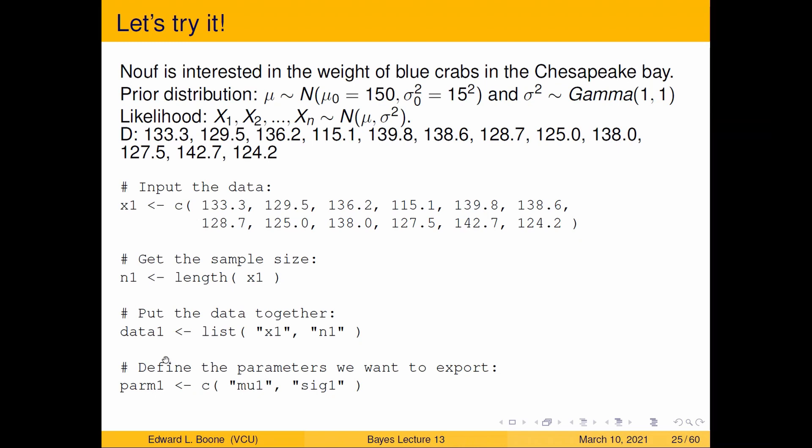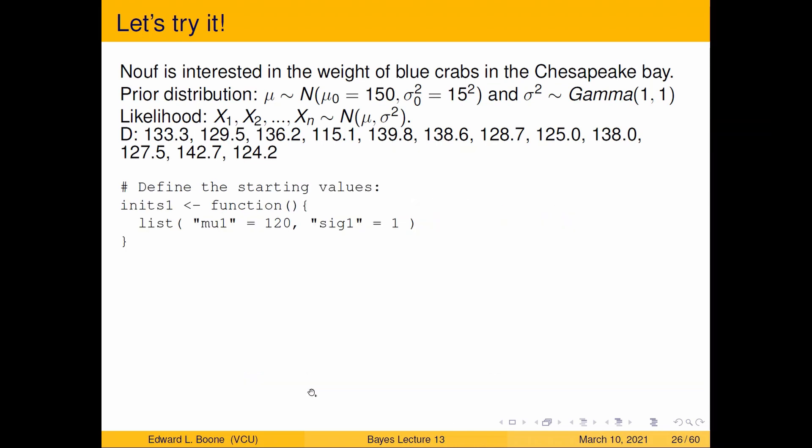Then the next thing we need to do is define the parameters we want to export at the end, basically the ones we want to keep track of. And you'd say, why wouldn't you want to keep track of all of them? Well, when you get hundreds of parameters, maybe you don't want to keep track of all of them. Maybe you just want to keep track of μ and σ1. And then, like we mentioned with the Gibbs sampler, we need the starting values. So here I've got μ is 120, σ is 1. I just chose them. They seem to be reasonable numbers.